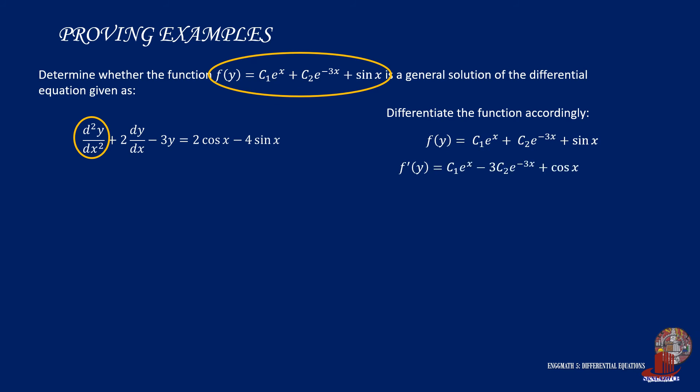The first derivative f'(y) equals c1 times e raised to x minus 3 times c2 times e raised to negative 3x plus cosine x. The second derivative f''(y) equals c1 times e raised to x plus 9 times c2 times e raised to negative 3x minus sin x. It is presumed that you remember your basic operations of differential and integral calculus.